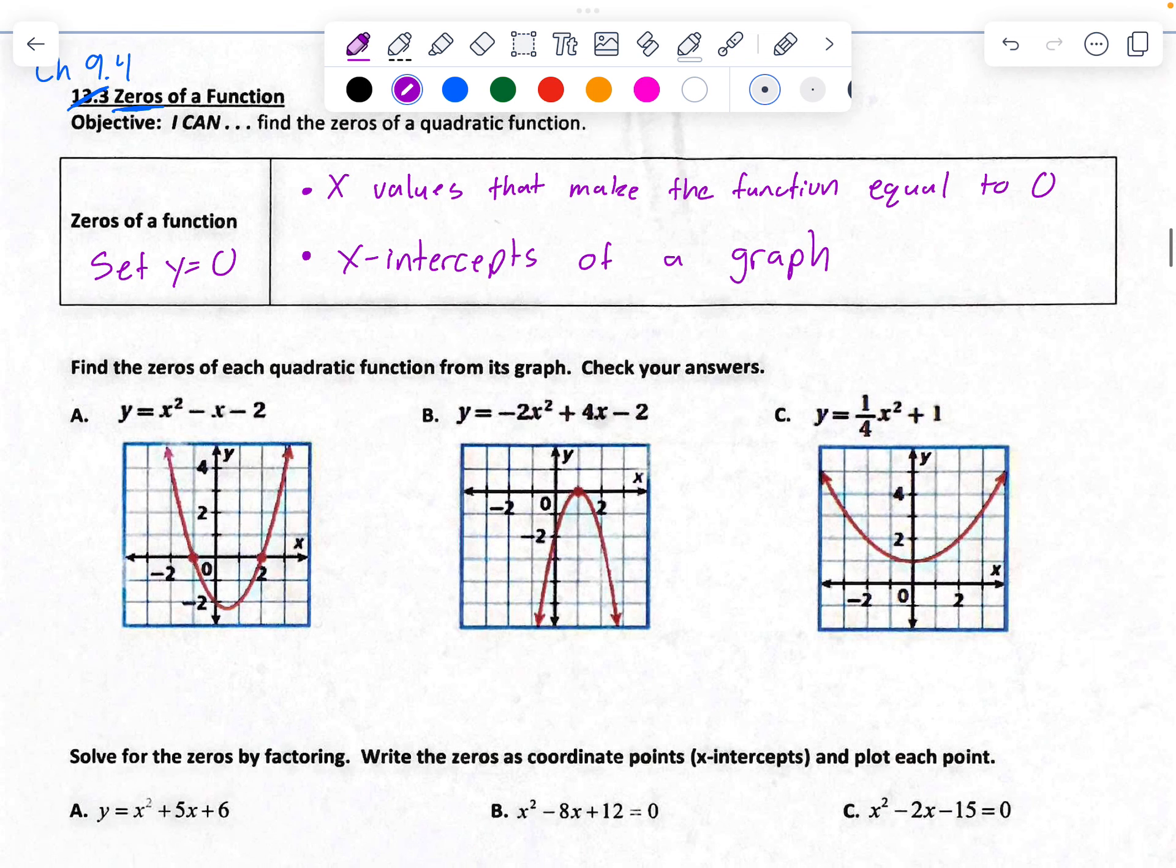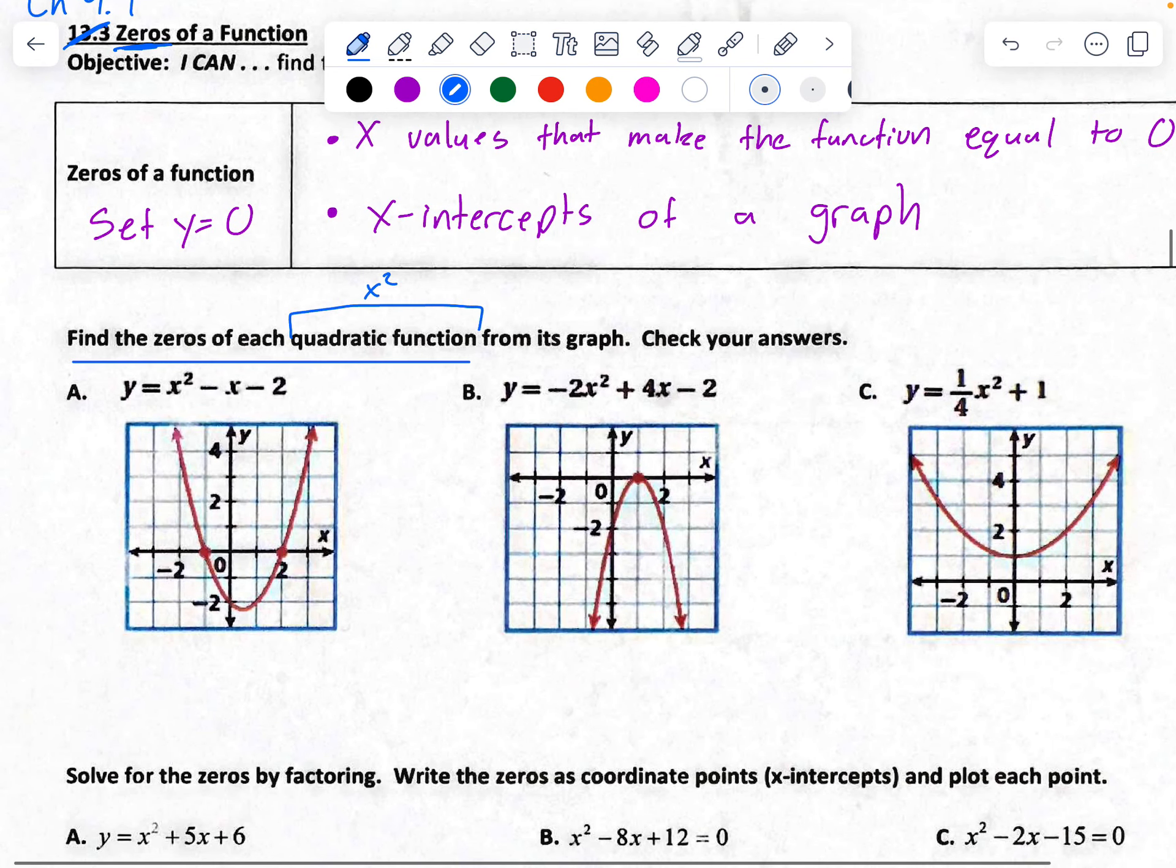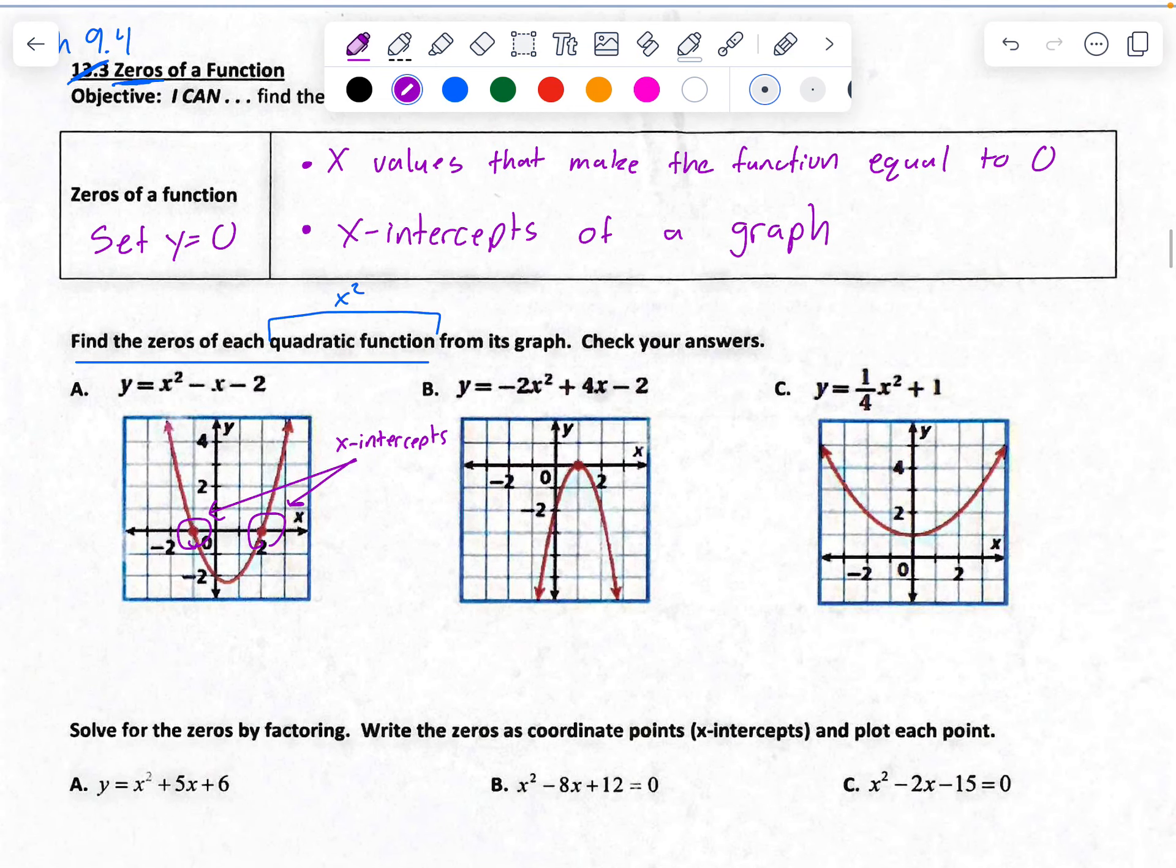So let's take a look here at your three examples, a, b, and c. The direction reads, find the zeros of each quadratic function. Reminder, quadratic function is your x squared. And then check your answers. So we take a look here. It's kind of easy to see your x-intercept graphically. It would be these two points here. So these are called your x-intercepts. So really, your answer already is going to be when x hits it at negative 1, and then x equals 2. So x equals 2, x equals negative 1.